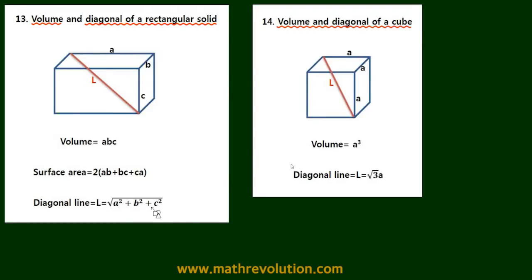Now we know that the volume of a rectangular solid is length times width times height and in a cube it's a to the power of 3 and the surface area is 2 times ab plus bc plus ca.